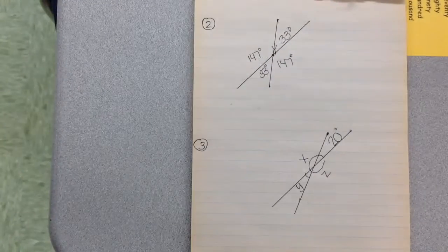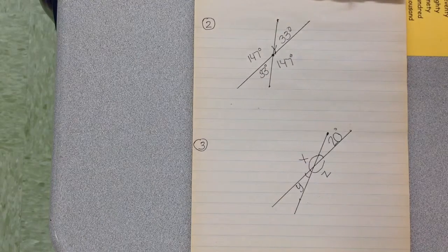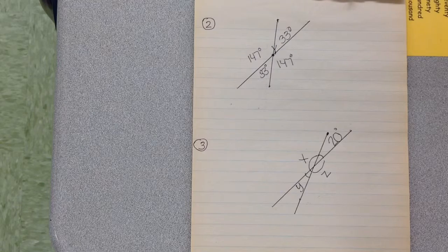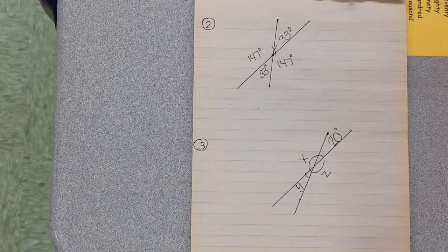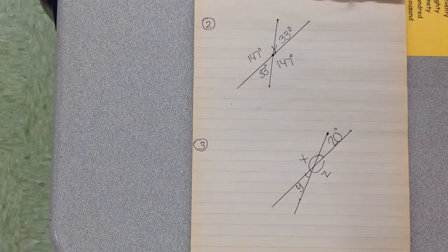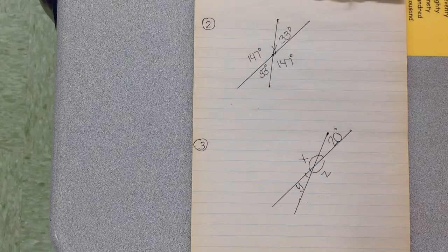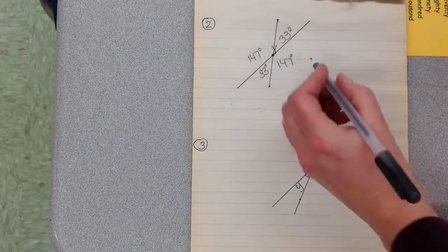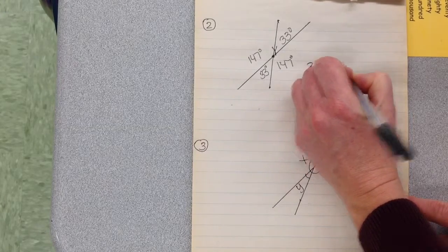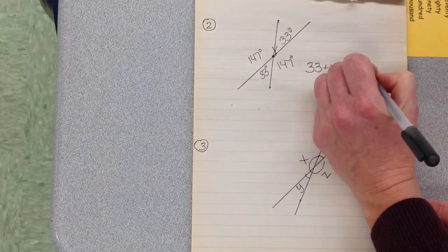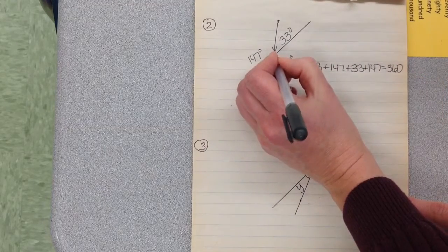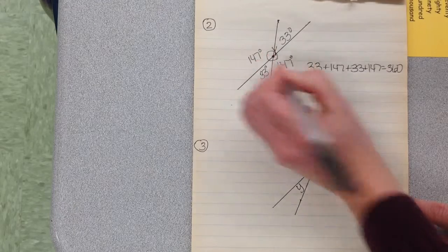This is another way that 360 can be decomposed. You're going to notice that the angles across from each other are the same. So if we write an equation, the total will be 360 because all of the angles surround one point. So 33 plus 147 plus 33 plus 147 equals 360 because you can see how it goes all the way around one point.